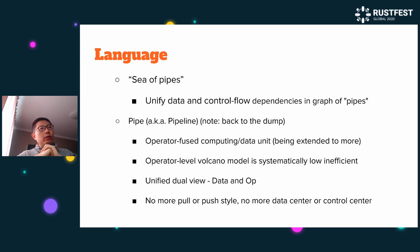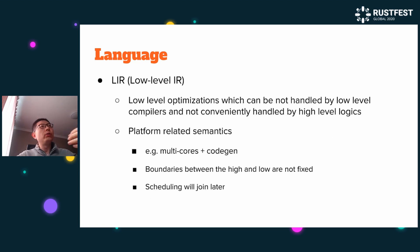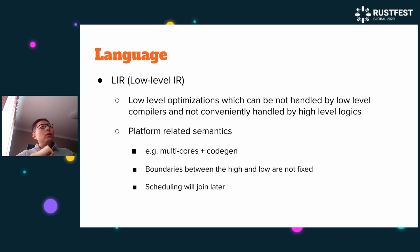In TensorBase, we don't use the traditional push or pull model — so no more data-centric or counter-centric paradigms. We just depend on what we want to retrieve. Low-level IR (RIR) is just for platform-related optimization, for example, parallelism or code generation.